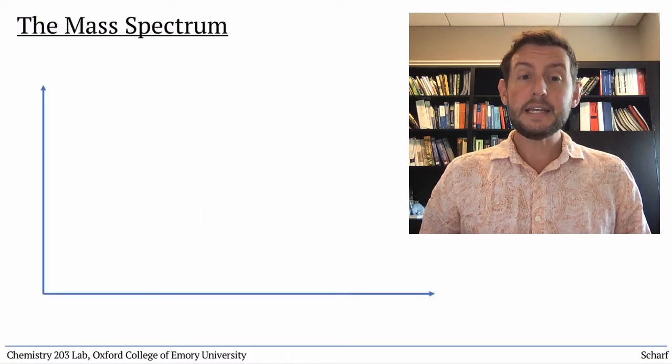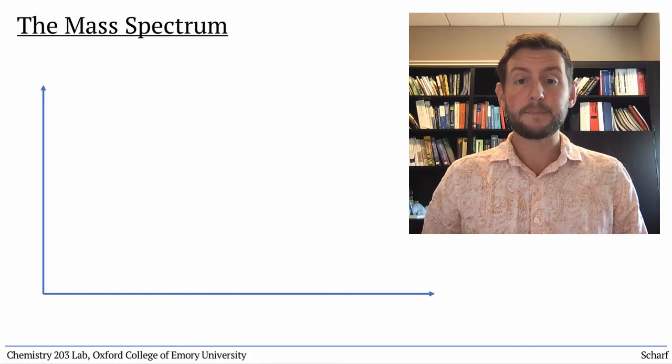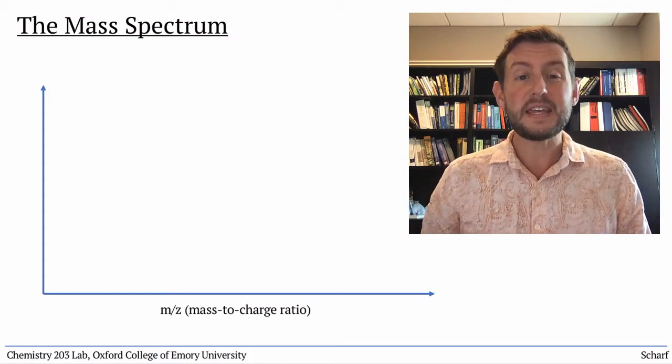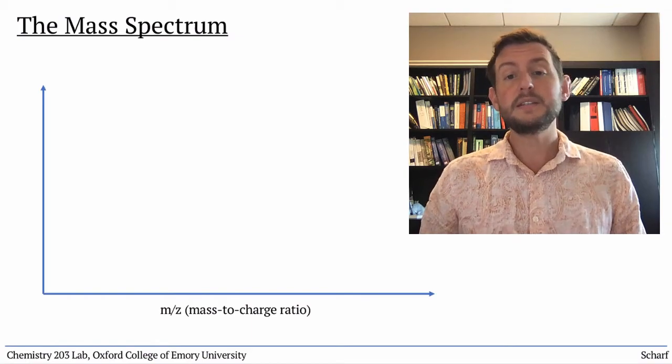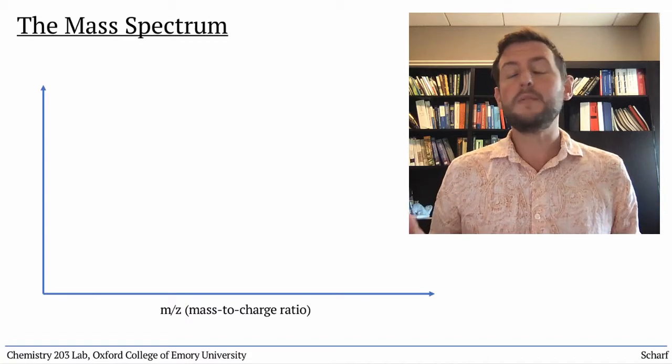The data produced by a mass spectrometer is a graph called a mass spectrum. The x-axis is M over Z, or the mass-to-charge ratio. For our purposes, since most of the ions have a single positive charge, this is equivalent to the mass.